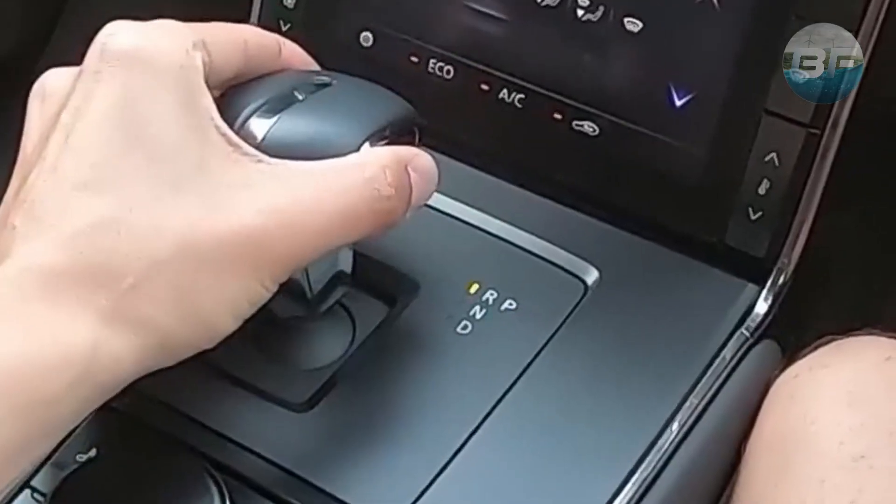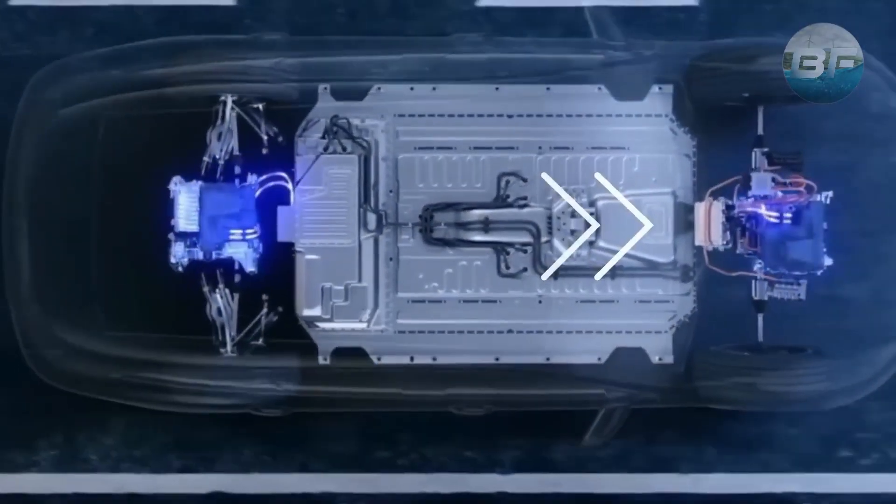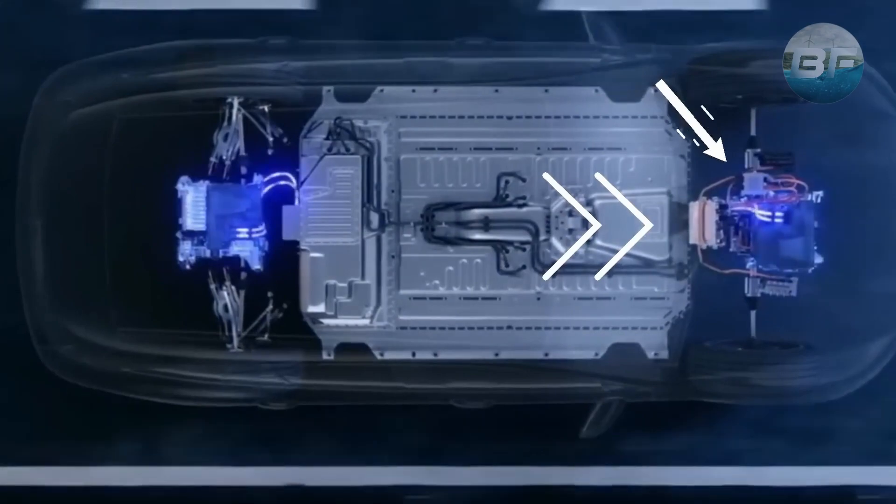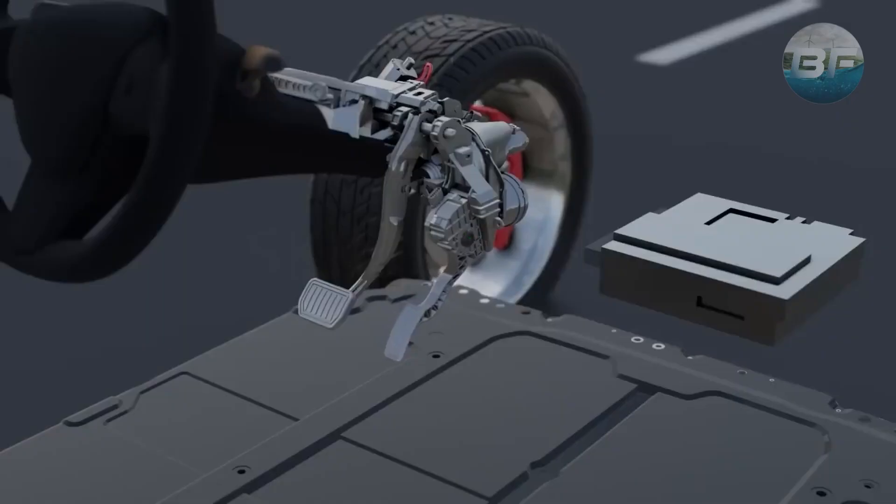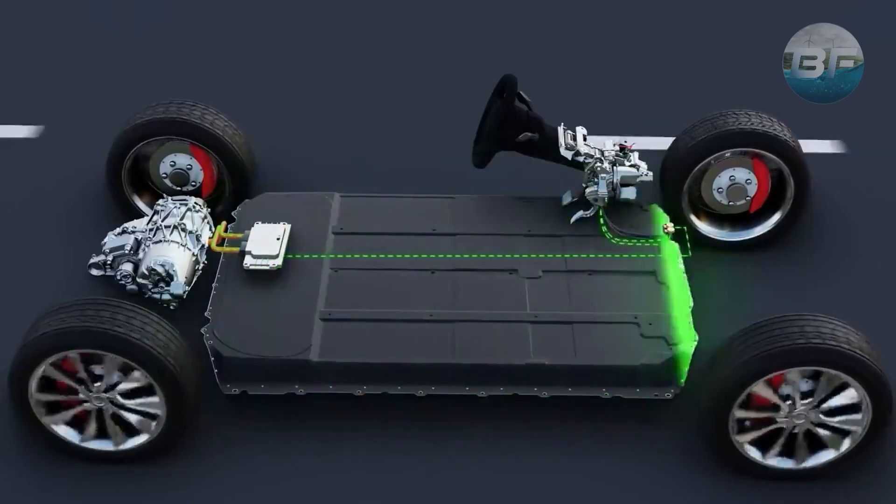When the driver selects the gear and presses the accelerator pedal, a sequence of events takes place. The DC power from the battery is transformed into AC power for the electric motor. The accelerator pedal sends a message to the controller, which adjusts the frequency of the AC power delivered to the motor to control the vehicle's speed.